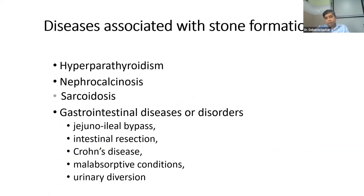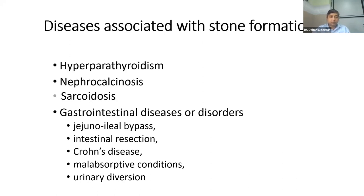When you treat a patient with stone disease, you need to know what other diseases put the patient at risk for recurrent stone formation. The most important is hyperparathyroidism for any reason — including parathyroid adenoma or secondary hyperparathyroidism in CKD patients. These patients will have hypercalcemia and recurrent episodes of stone formation. One condition is nephrocalcinosis or medullary sponge kidney.